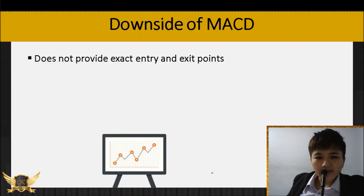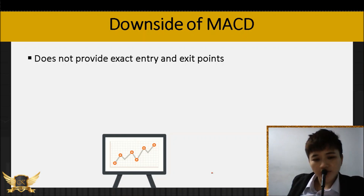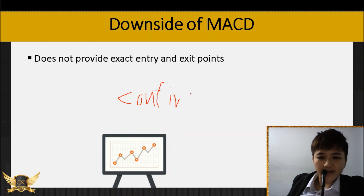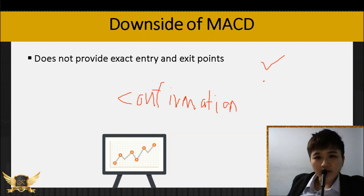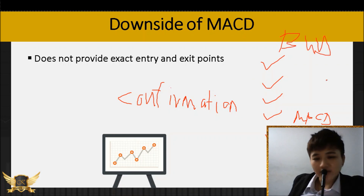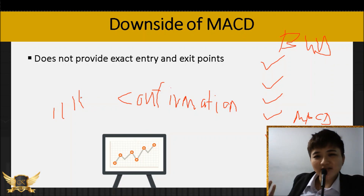Another downside is that MACD can lag the price — sometimes the price has already moved and only then will MACD give you the signal. Also, you can't use it alone; you need to add other indicators. This is a confirmation indicator to increase your probability of trading. You want your checklist to be: criteria one fulfilled, criteria two fulfilled, criteria three fulfilled, MACD criteria fulfilled — then you can enter, rather than just buying because the histogram is sloping upwards.